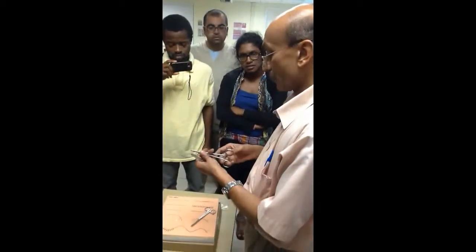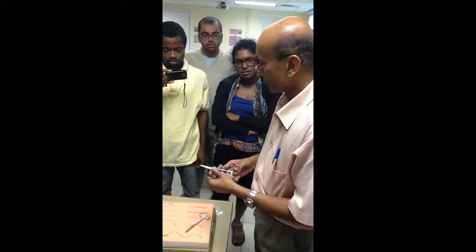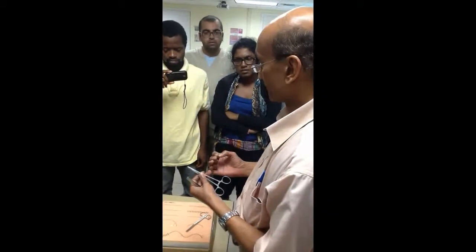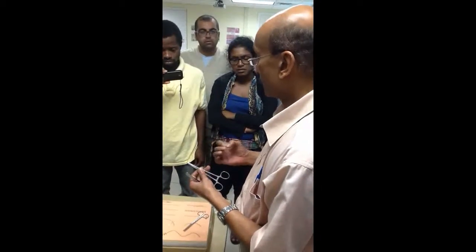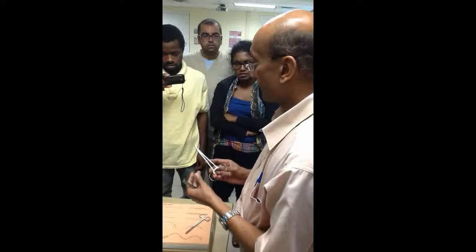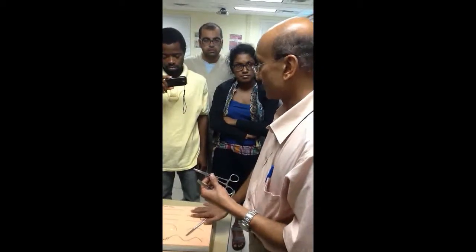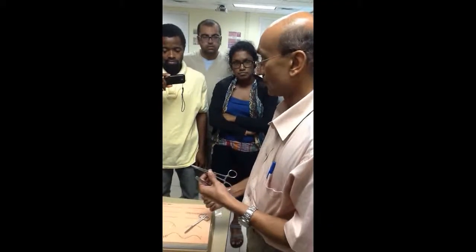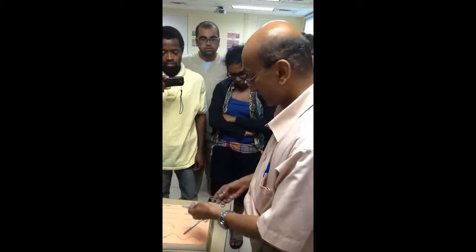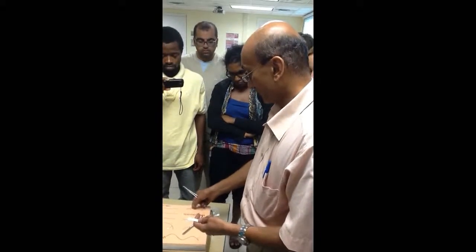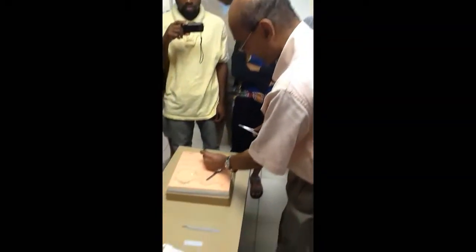When do we use a round-bodied needle, and when do we use a cutting needle? A round-bodied needle is used for delicate structures like peritoneum, mesentery, and intestine. A cutting needle is used for tough structures like the skin, the rectus sheath, and the linea alba. Since this material mimics the skin, we shall be using a cutting needle for this.